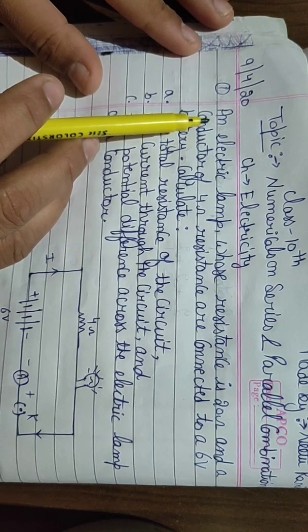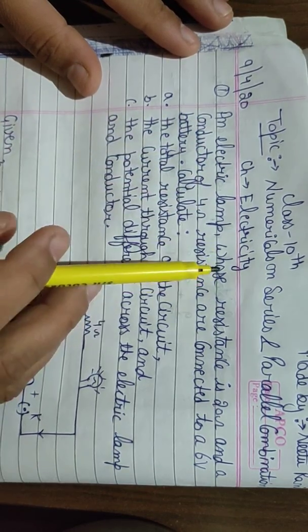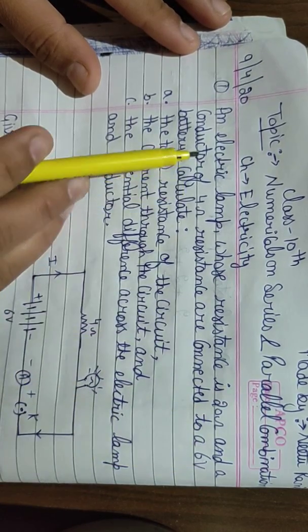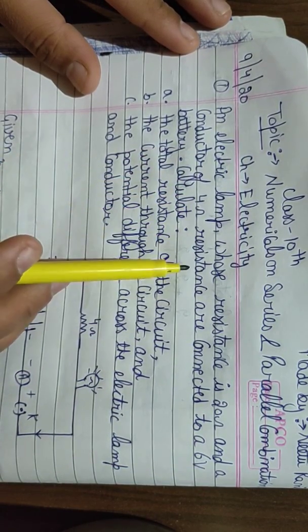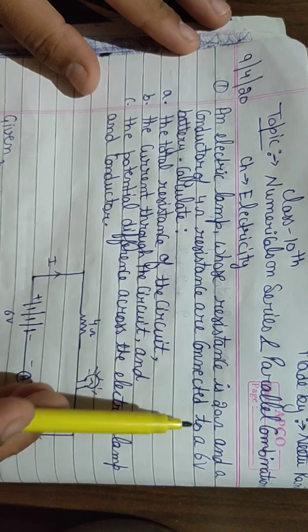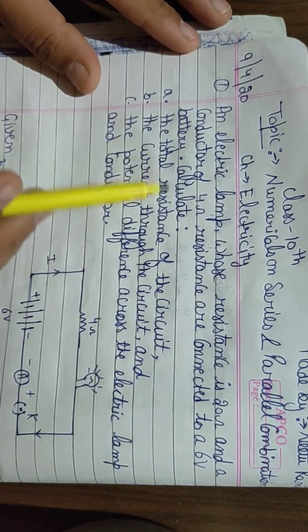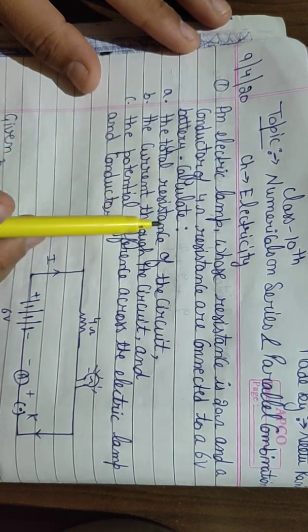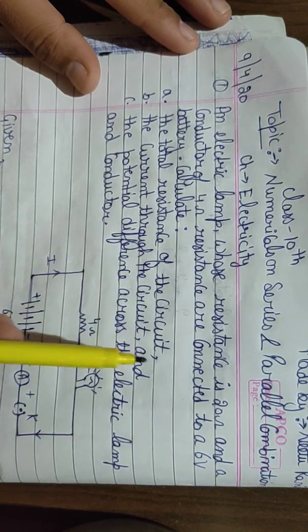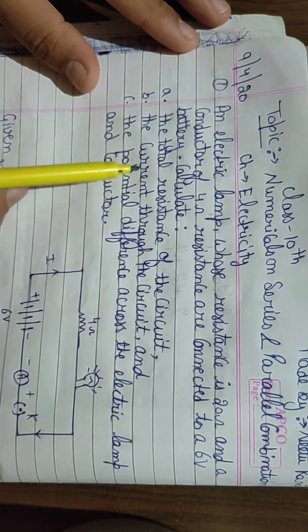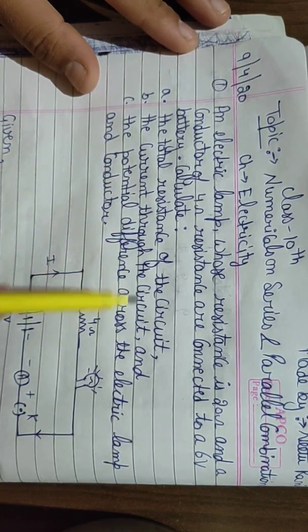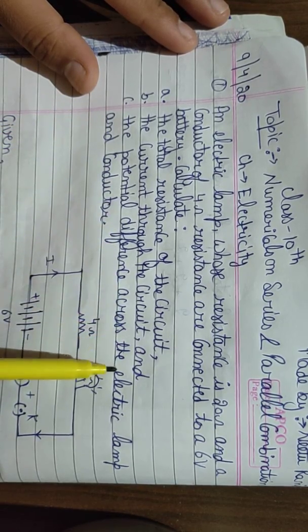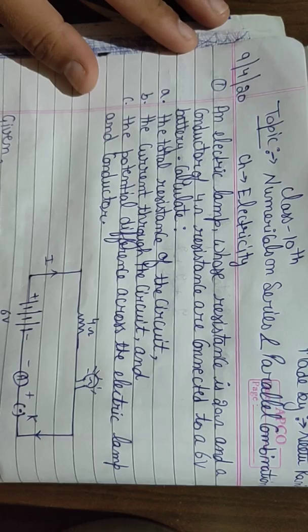The statement of the first numerical is: an electric lamp whose resistance is 20 ohm and a conductor of 4 ohm resistance are connected to a 6 volt battery. Calculate: (a) the total resistance of the circuit, (b) the current through the circuit, and (c) the potential difference across the electric lamp and conductor.